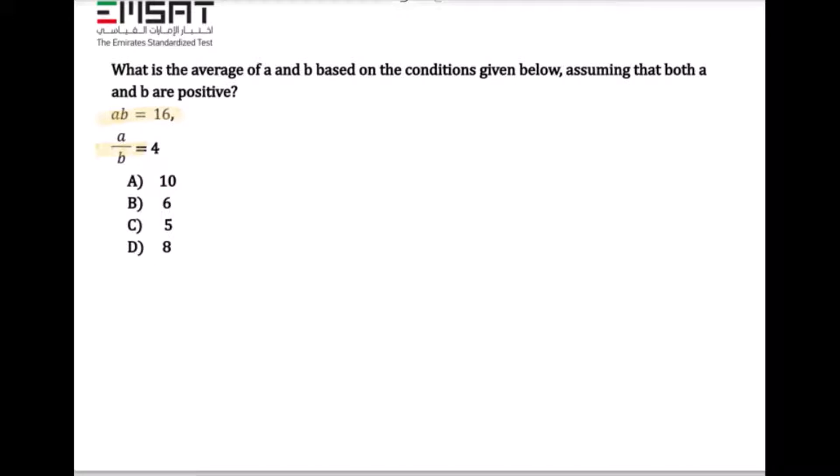To find the average of a and b, we need first to find the values of a and b. Given that a over b equals 4, we will convert 4 as a fraction, so it will be 4 over 1. After that, we will do a cross multiplication: a multiplies 1 and b multiplies with 4. So a equals 4b.